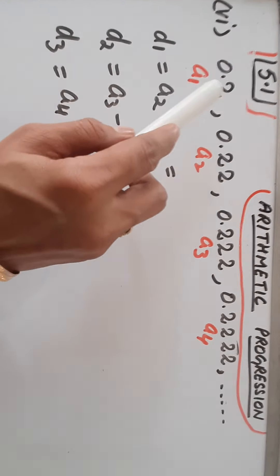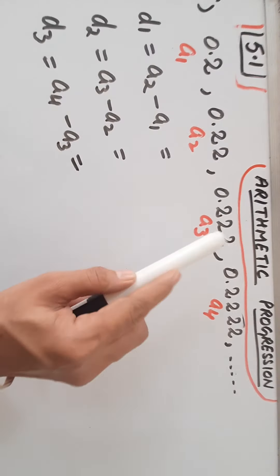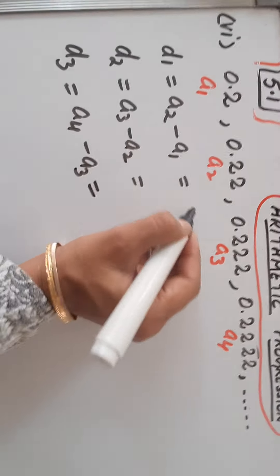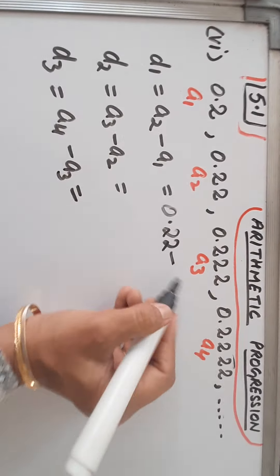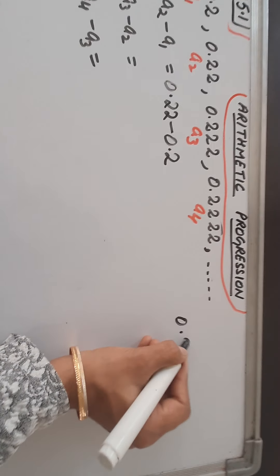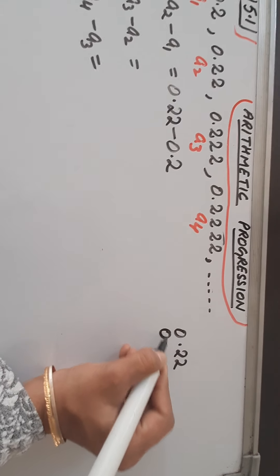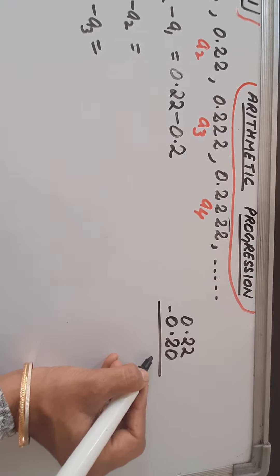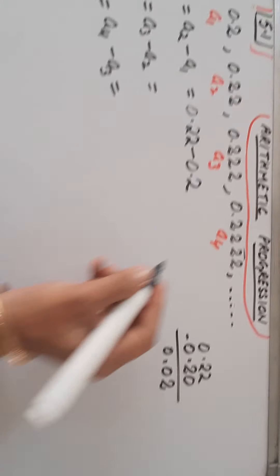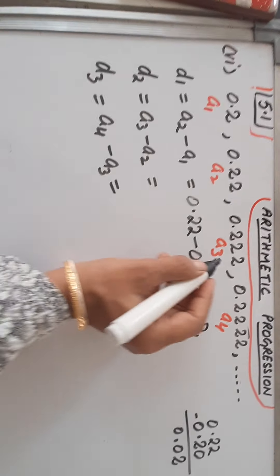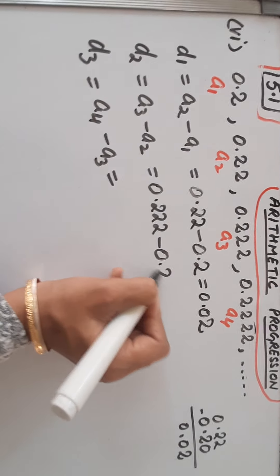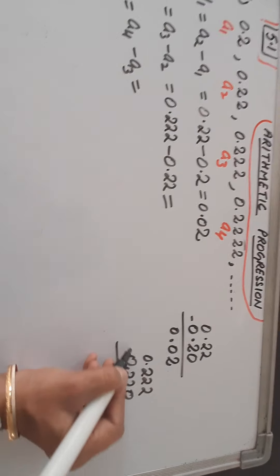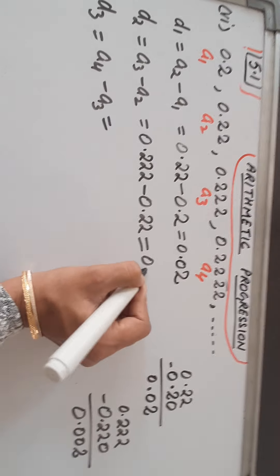Now the 6th part: the list of numbers is 0.2, 0.22, 0.222, 0.2222. Let us find out their common difference. A2 minus A1: 0.22 minus 0.2. Subtracting: 2 minus 0 is 2, 2 minus 2 is 0, giving 0.02. For D2: A3 minus A2 is 0.222 minus 0.22. Setting it up with a trailing zero: 0.222 minus 0.220 gives 0.002.